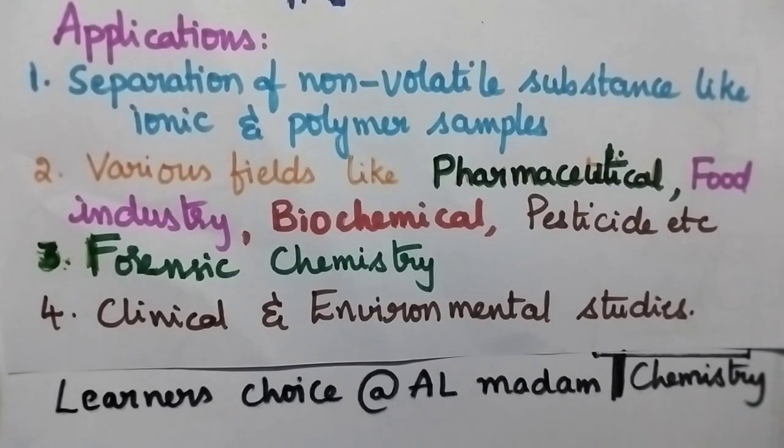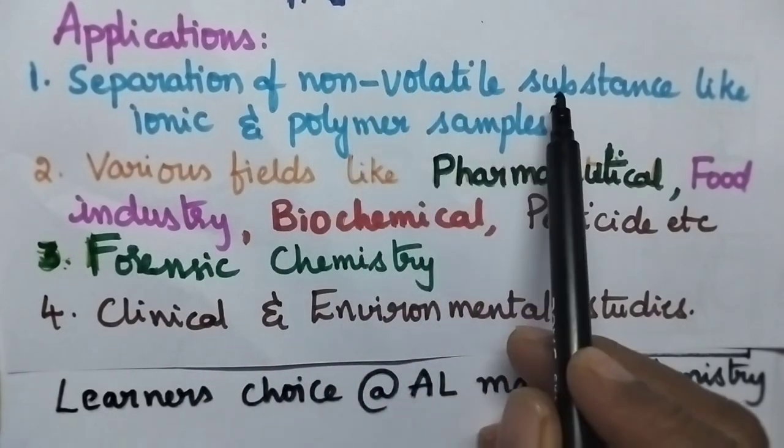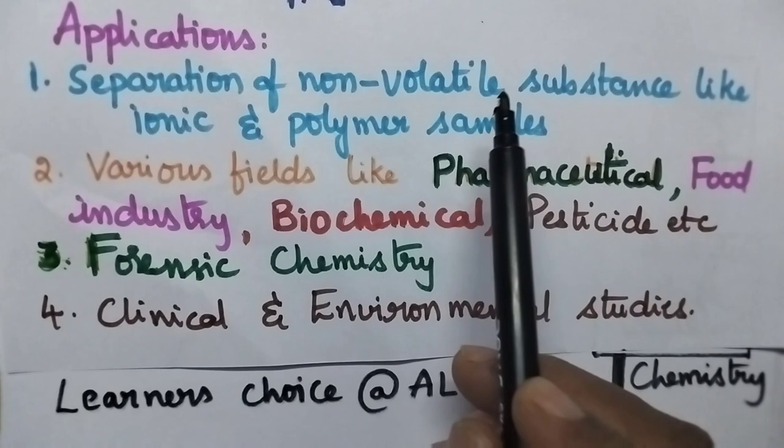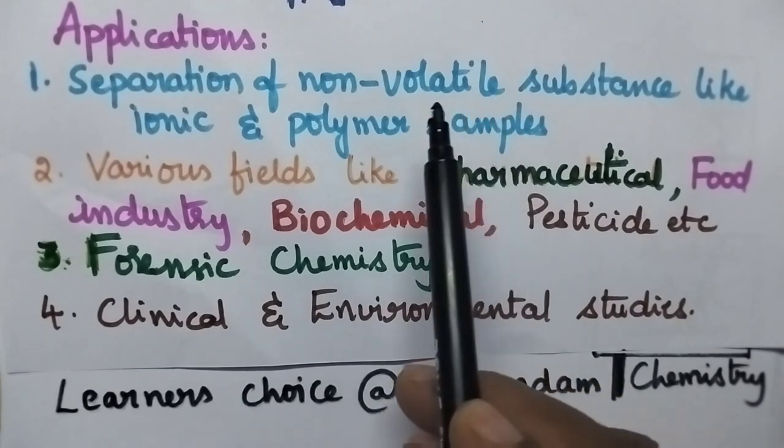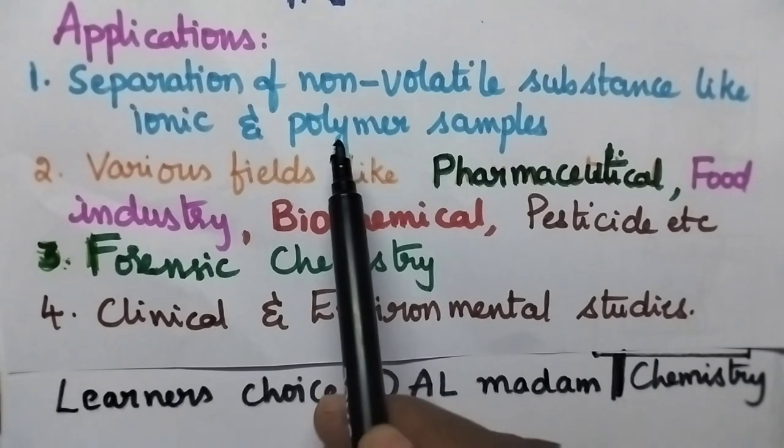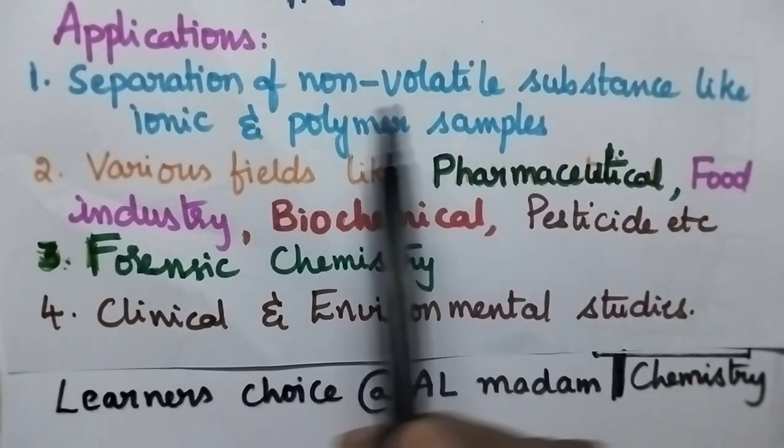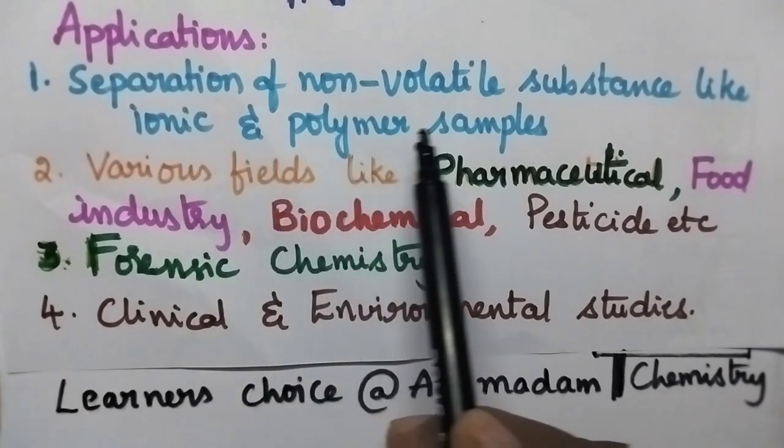HPLC is highly useful for the separation of non-volatile substances since the mobile phase is used under high pressure, making it possible to separate non-volatile substances like ionic and polymer samples.